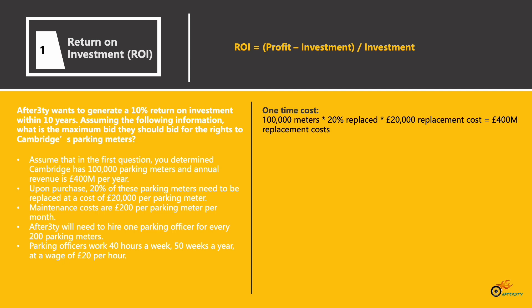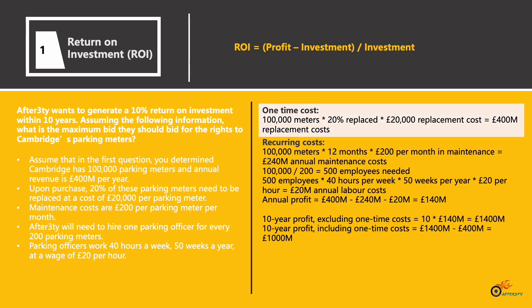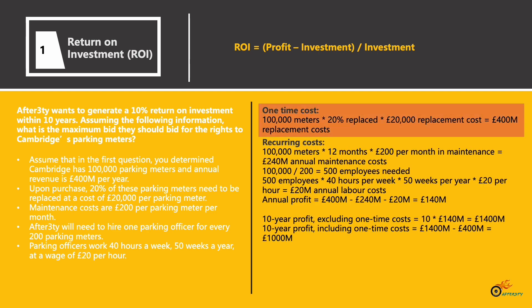First, we need to calculate the one-time cost: 100,000 meters times 20% replaced times £20,000 replacement cost, which gives us £400 million for the replacement costs. Next, we are going to calculate the recurring costs — specifically the annual maintenance costs, the annual labor costs, and the annual profit.